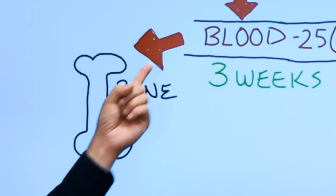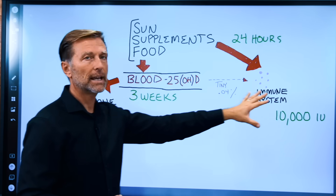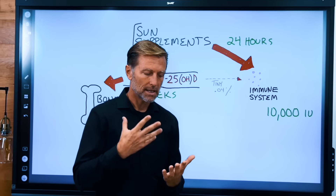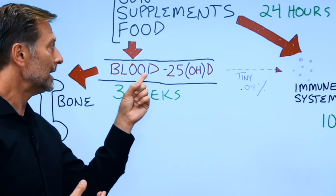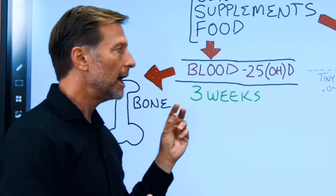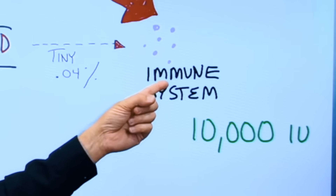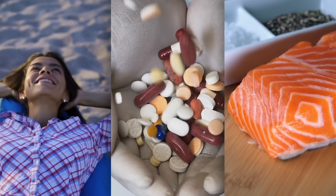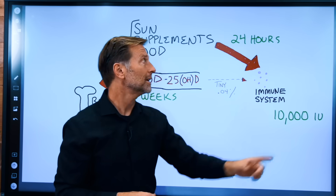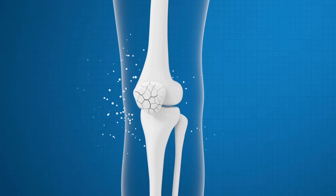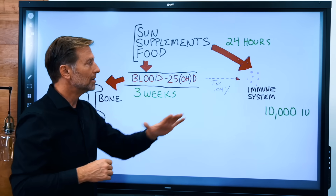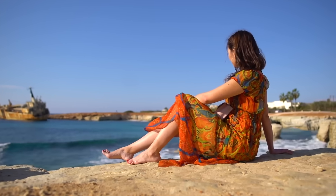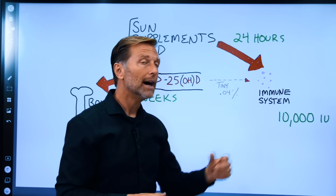One vitamin D system is all about calcium and bone. The other system covers everything else — including the immune system. The vitamin D in the blood is in an inactive form, mainly to feed the bone. Only about 0.04% of it feeds the immune system. If you want a strong immune system but you're not getting daily sun, supplements, or dietary vitamin D, your immune system will suffer because the half-life is 24 hours. For bone, 600 to 800 IUs is sufficient, but for the immune system you need a minimum of 10,000 IUs — equivalent to about 20 minutes in the sun — every single day.